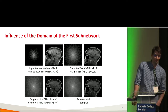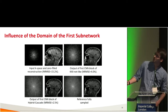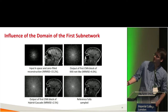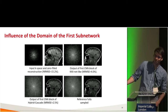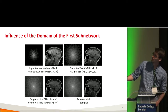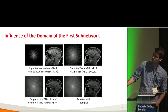Regarding the influence of the domain of the first subnetwork: I believe using an image domain subnetwork at the beginning is better than k-space domain. In KikiNet-like, which starts with k-space, the network does a good job for low frequencies where there are many samples, but struggles with high frequencies because there is no signal to convolve. The NRMSE for the first block was 4%. For my hybrid cascade starting with image domain, the reconstructed k-space is much closer to the fully-sampled reference, with an error of only 2.5%.